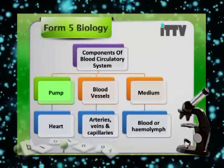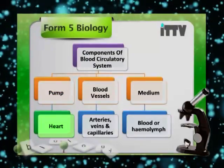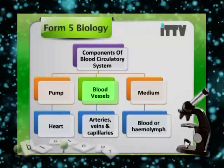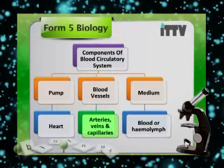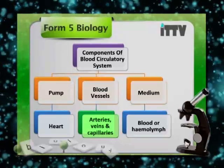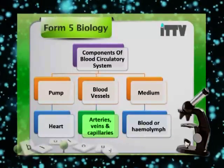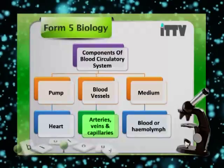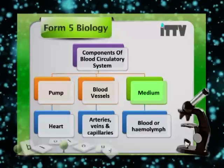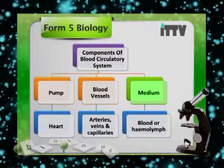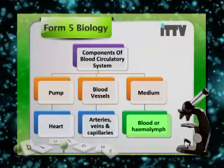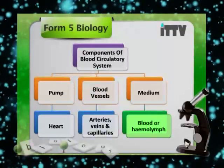Let us take a look at this slide — the components of the blood circulatory system. The pump is the heart, which functions to pump blood throughout the whole organism. The blood vessels — such as arteries, veins, and capillaries — are the channels through which blood reaches all the required cells, tissues, and organs. The medium for distributing all the required nutrients and for eliminating waste is none other than blood or haemolymph.